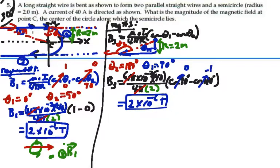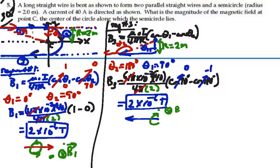Using the right-hand rule for a current going to the left and finding the field above at point C, the field is going into the page again. So B3 is also into the page, and we now have two magnetic fields both directed into the page at point C.